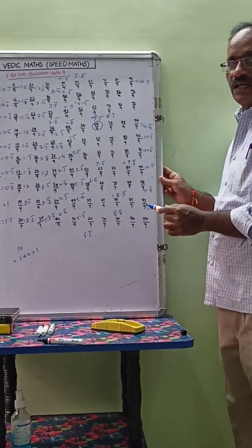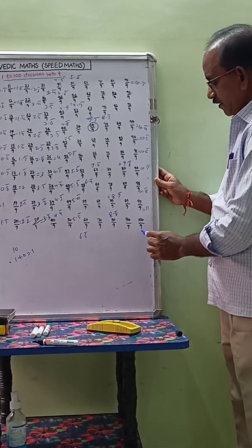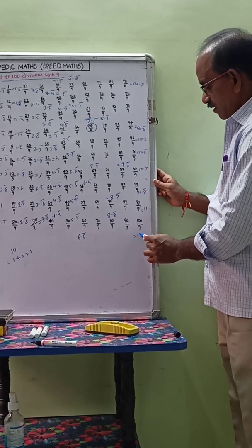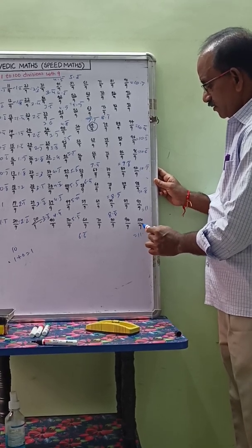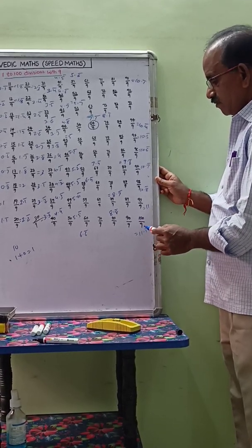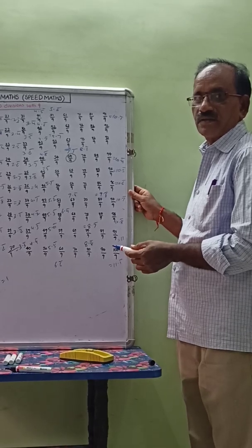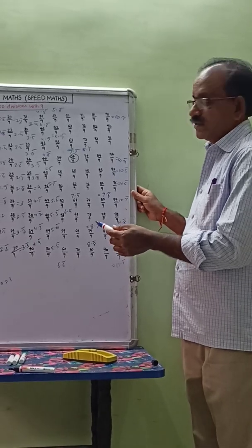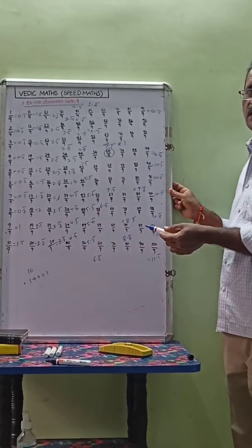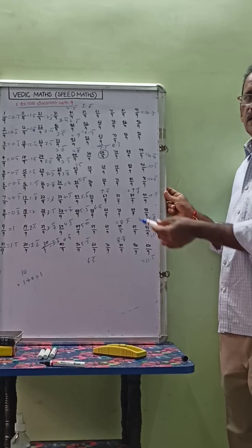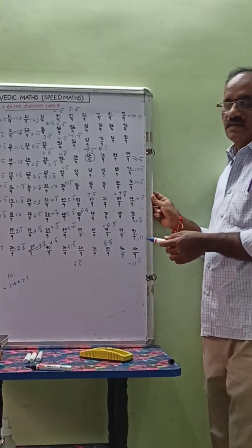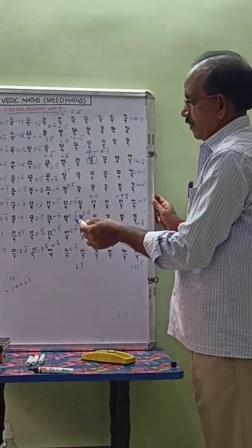100 by 9 equals 11.1 bar — sum of the digits. Similarly, we can easily do all numbers divided by 9.